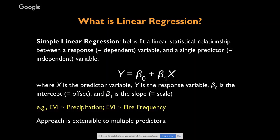The kinds of questions amenable to linear regression in Google Earth Engine include: how does biomass, as indexed by EVI, change with precipitation? Or is plant biomass affected in areas with frequent fires? These are simple linear regression questions you can tackle in Google Earth Engine. This approach is also extensible when you have multiple predictors — X1, X2, and so on — and Earth Engine supports that, though it's not the example we'll cover today.